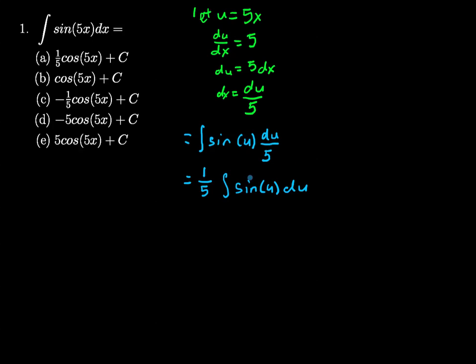And we know the antiderivative of sine is negative cosine since the derivative of negative cosine is positive sine. So this means that we will get 1/5 times negative cosine of u.